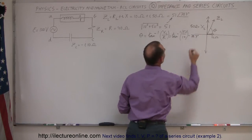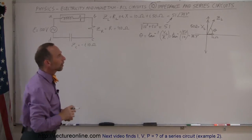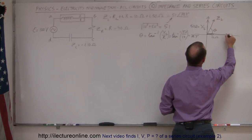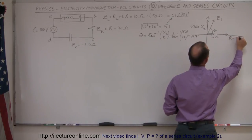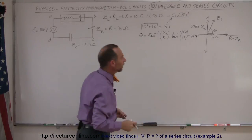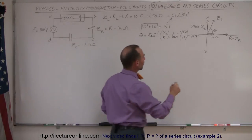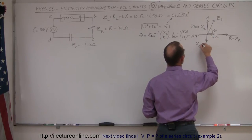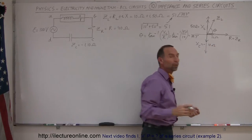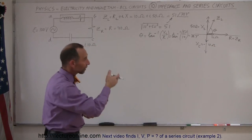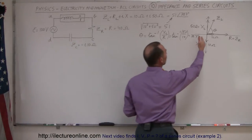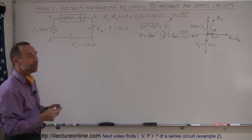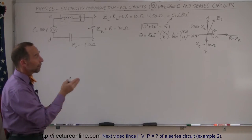Now we still have the resistor at 40 ohms along the real axis, so Z_R equals 40 ohms. Then we have the reactance of the capacitor, X_C, which is negative 10 ohms — down in the negative imaginary direction, 90 degrees behind the resistor, with no resistance component.